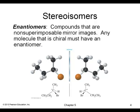When we apply chirality to molecules, we introduce the concept of stereoisomers. The best way to get introduced to stereoisomers is by looking at enantiomers. Here is the important definition: enantiomers are molecules or compounds that are non-superimposable mirror images.